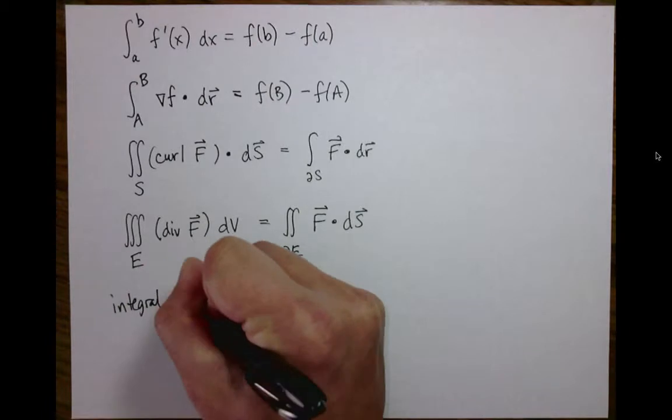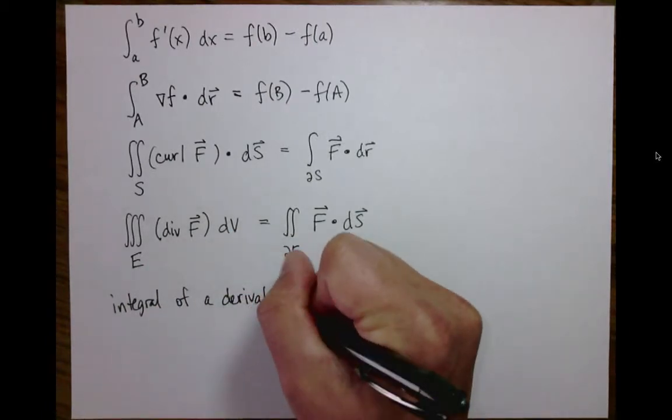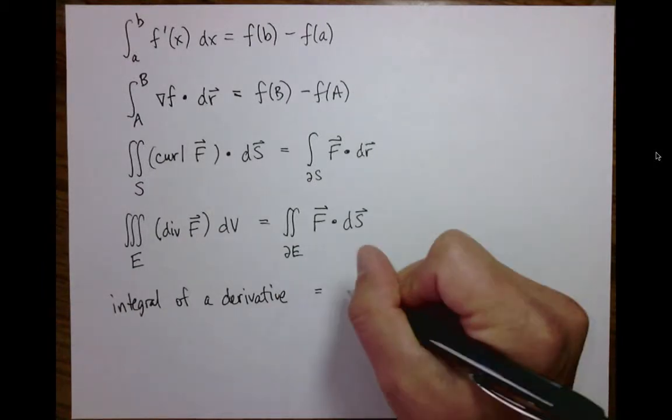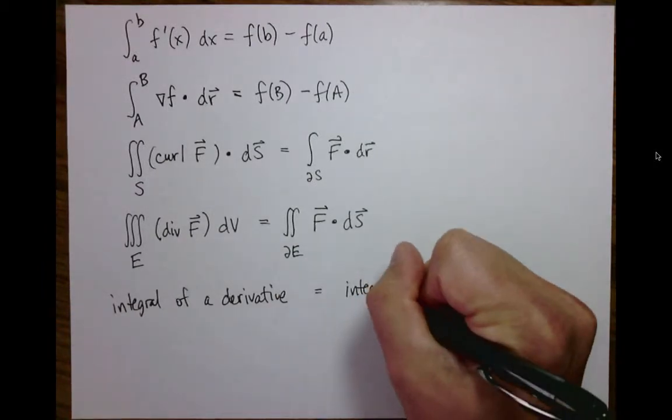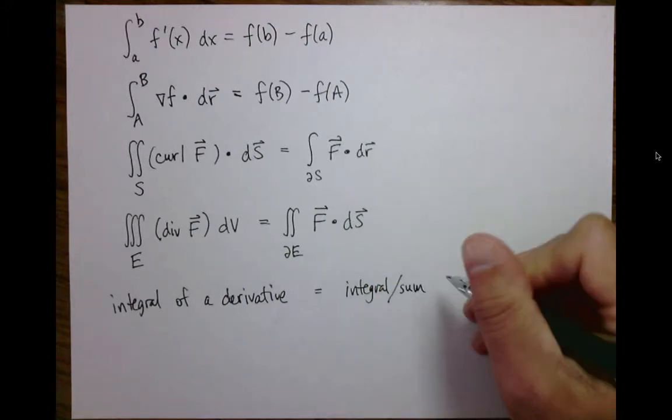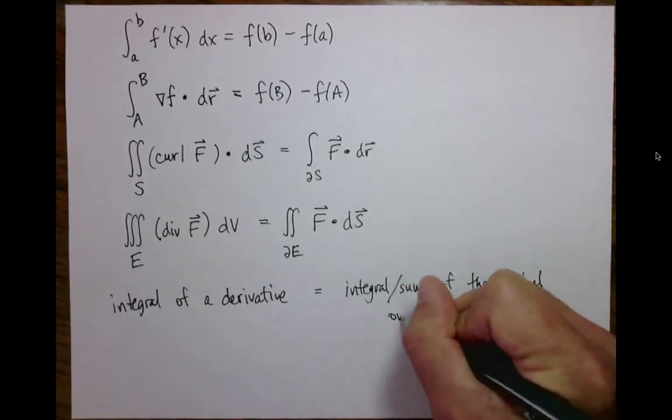The integral of a derivative over something is the integral or sum, of course integrals are really just kinds of sums, of the original function on the boundary.